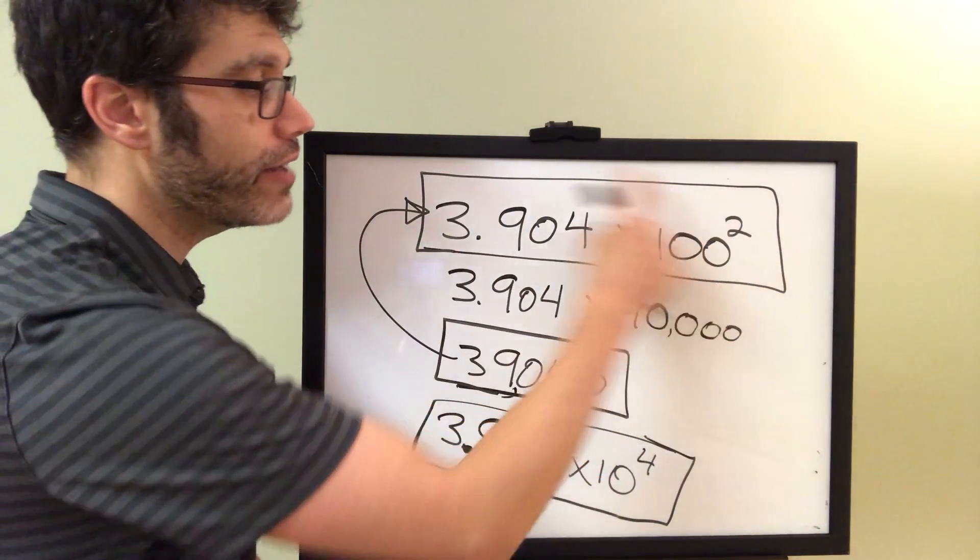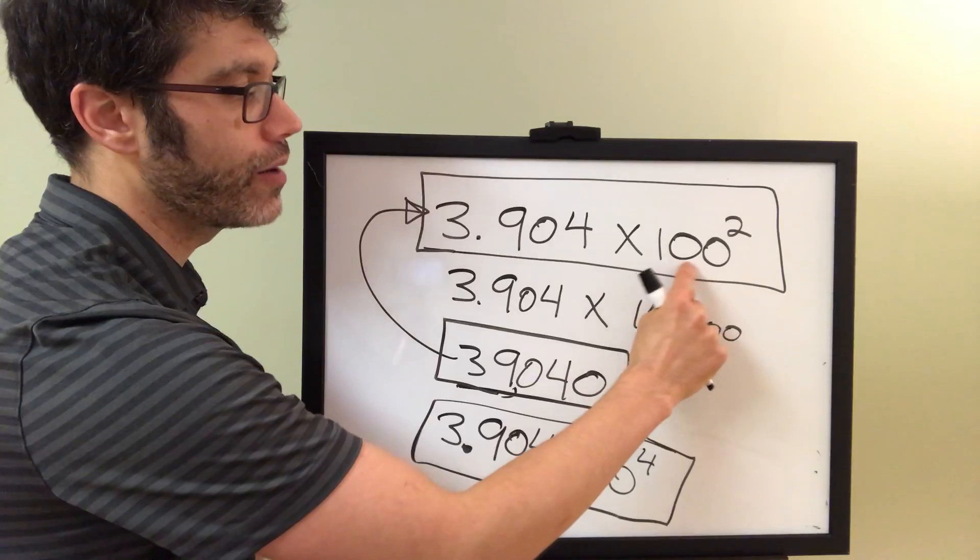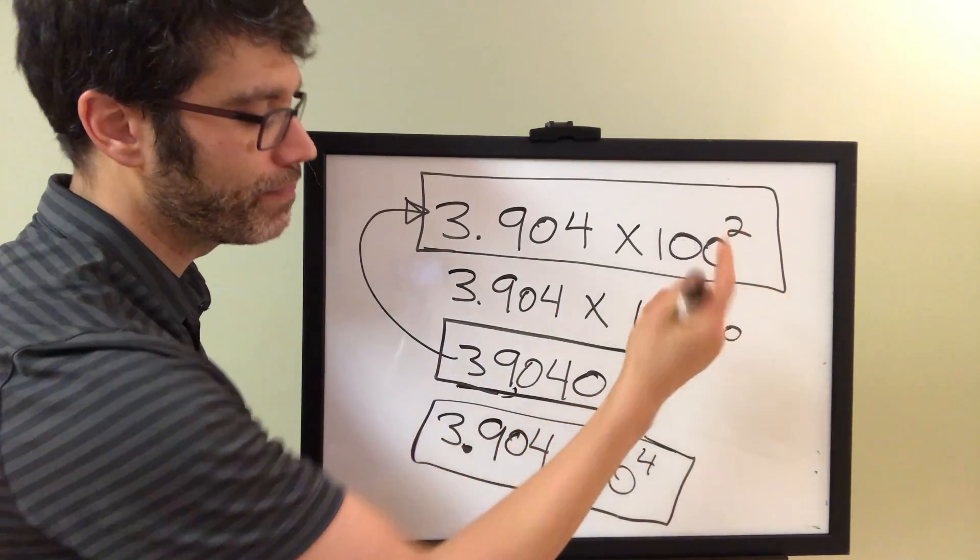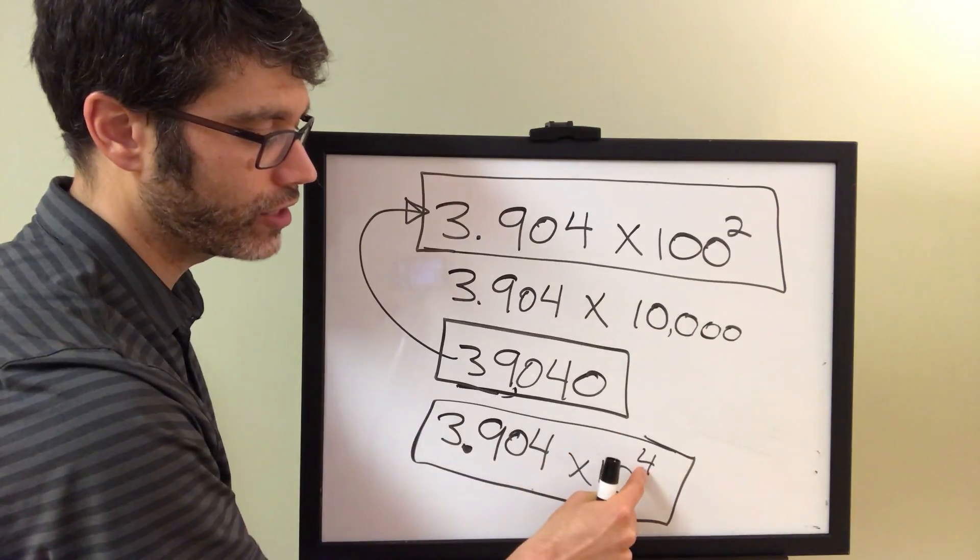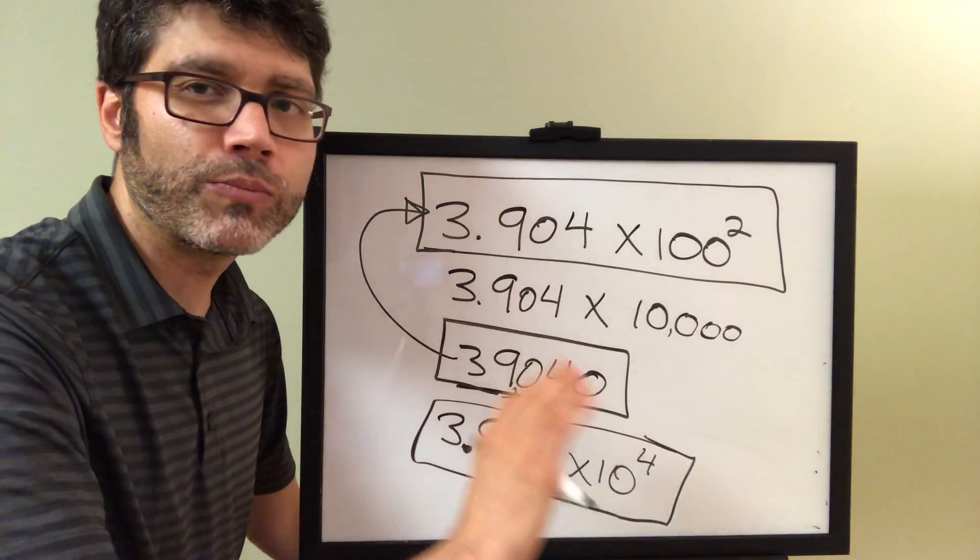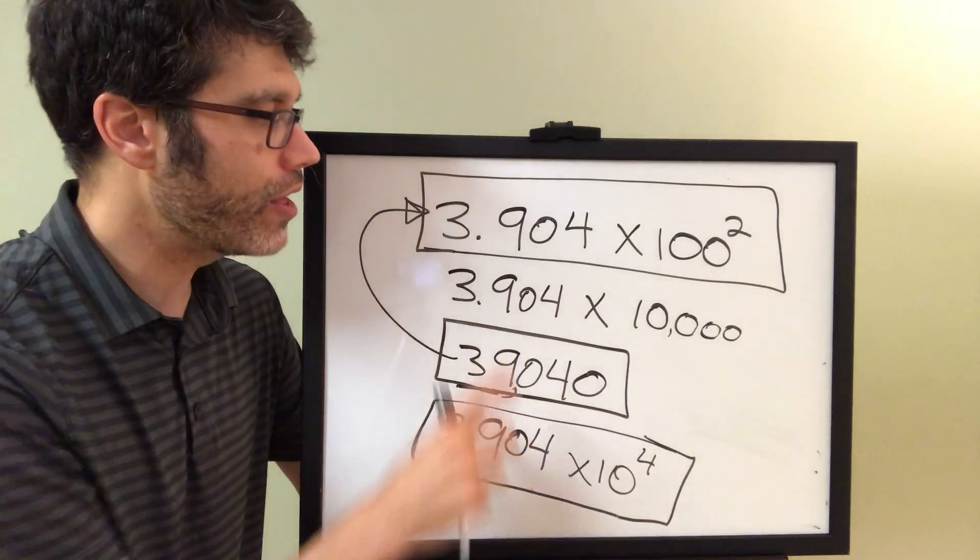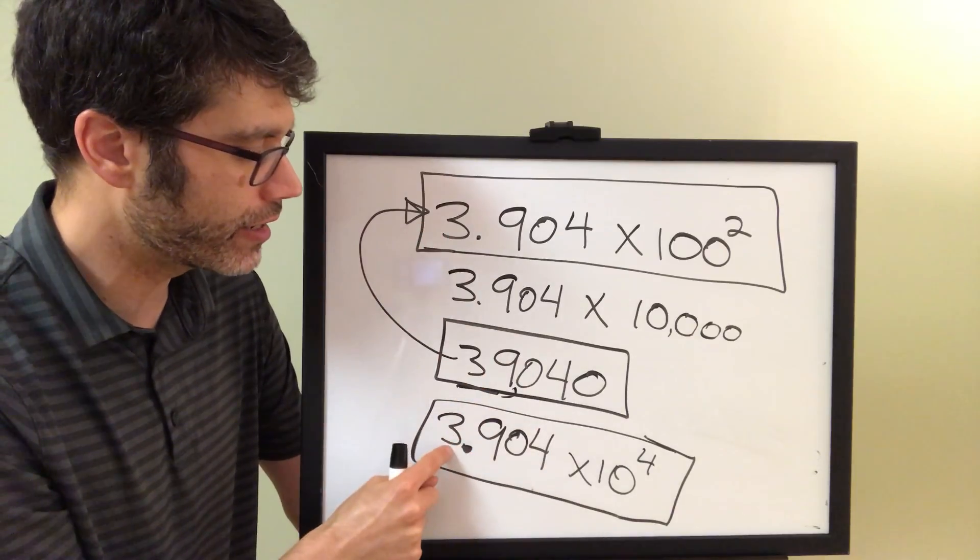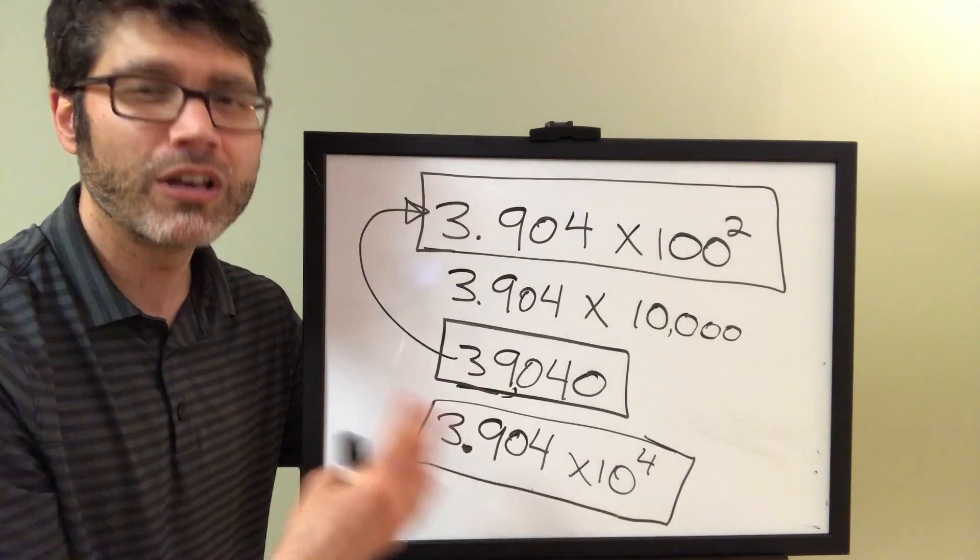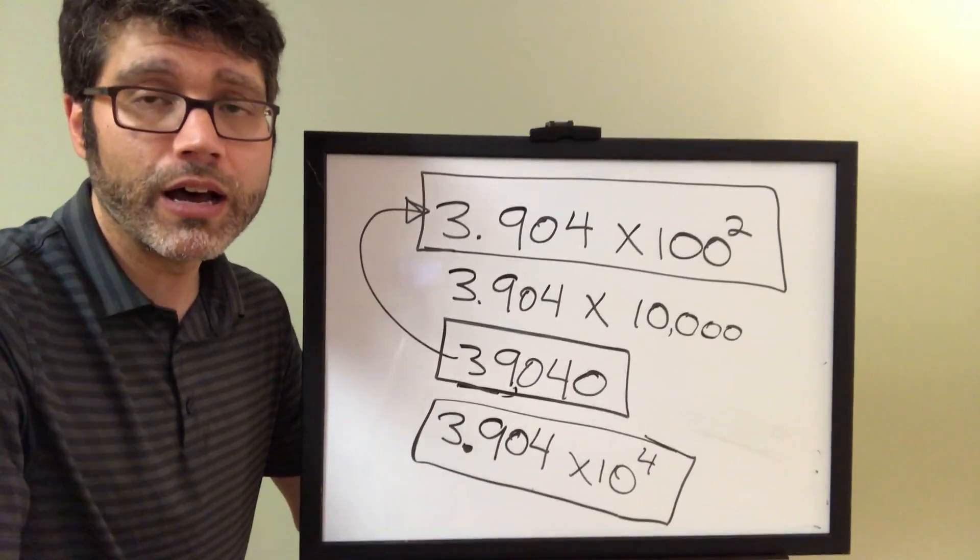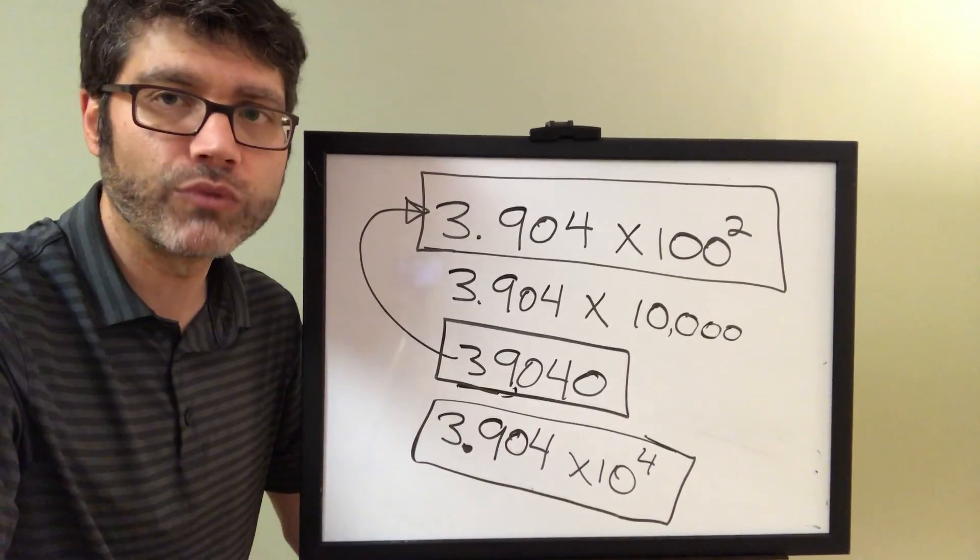Again, you could have figured it out right away by knowing that this is 100 as the base to the second, and then you can convert it in your head to the fourth. However, as we're starting out, I feel like the best way to get from here to here without making any mistakes for the first few times as you're learning it is to go through this process of putting it back into standard form.